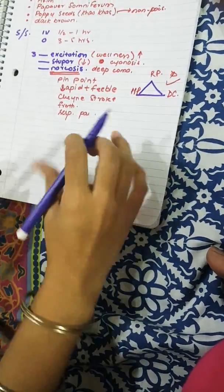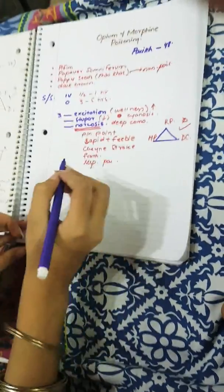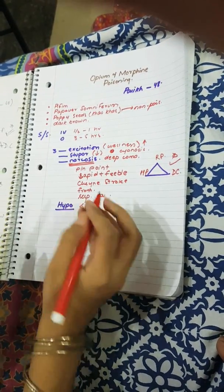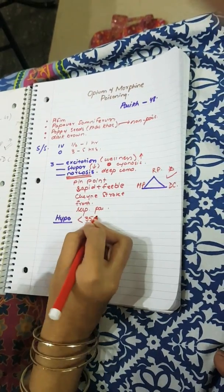Then we need to know that there is hypothermia. Hypothermia means that the temperature of the body goes below 35 degrees centigrade.